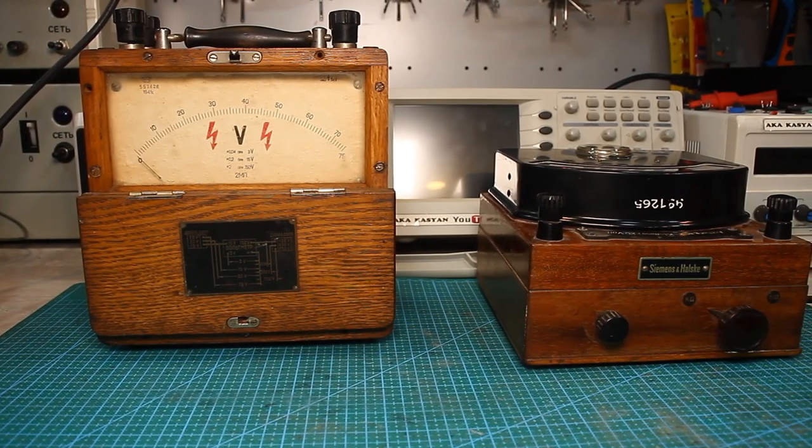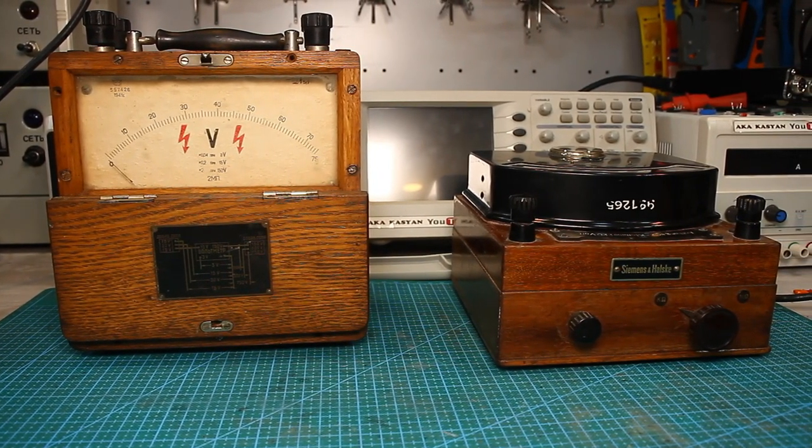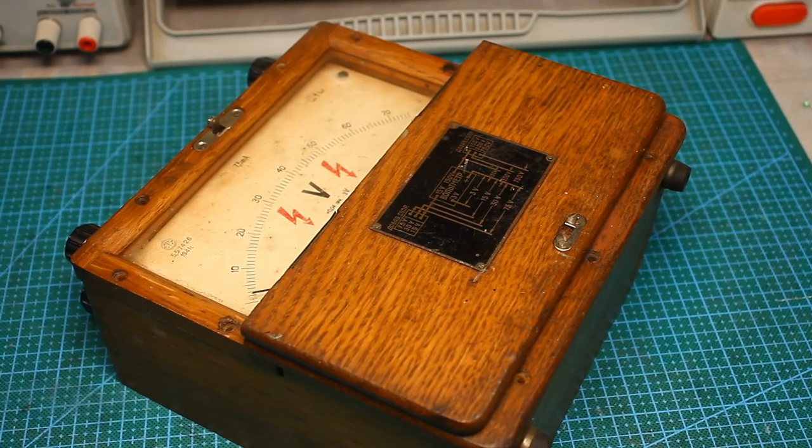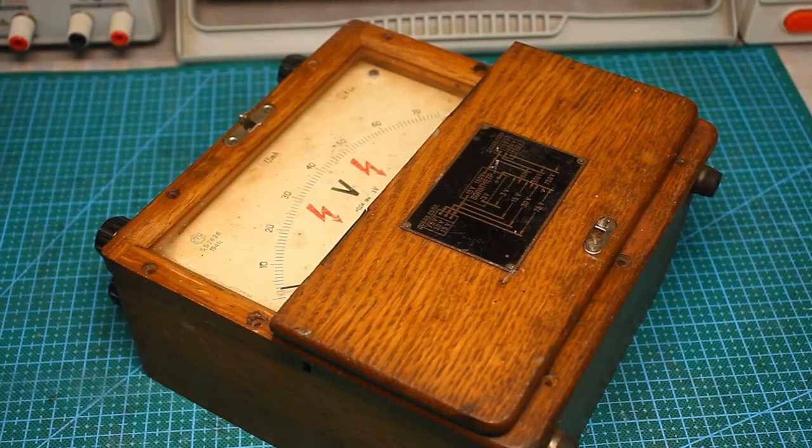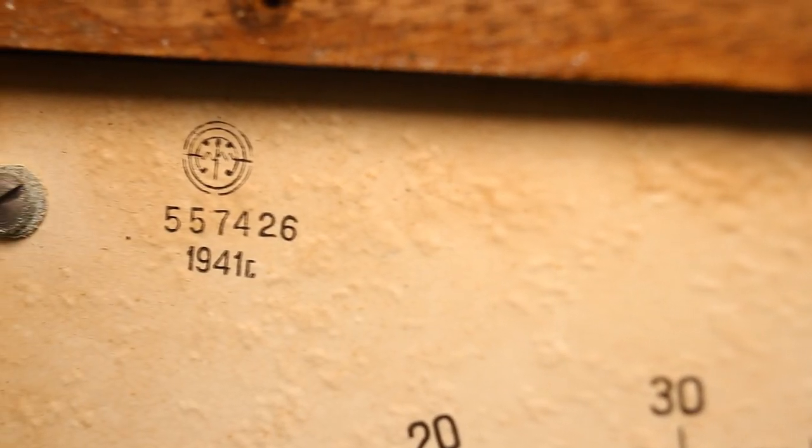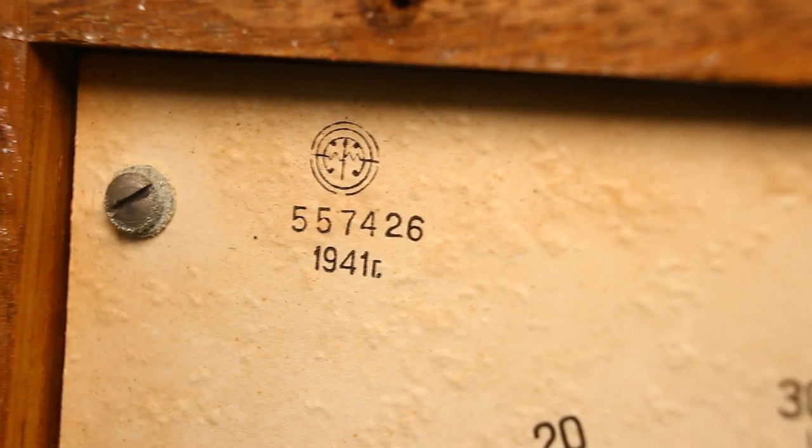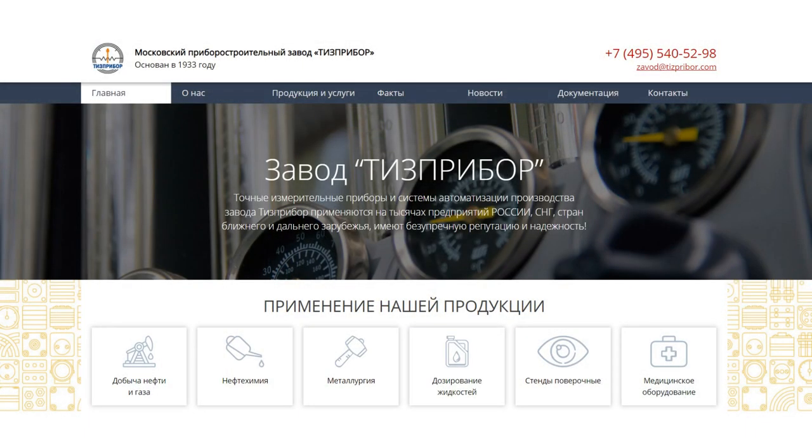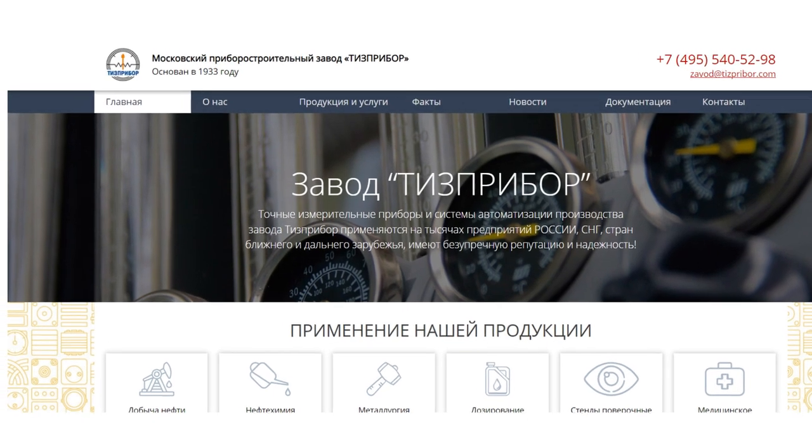I spent a lot of time looking for information about the German megaohmmeter while the Soviet voltmeter was authenticated in just half an hour of searching on the internet. Because with the release date everything is clear, it remains only to understand where, or rather at what factory it was made. And this is most likely the Moscow factory Tisbribor. The factory even now has the same logo.